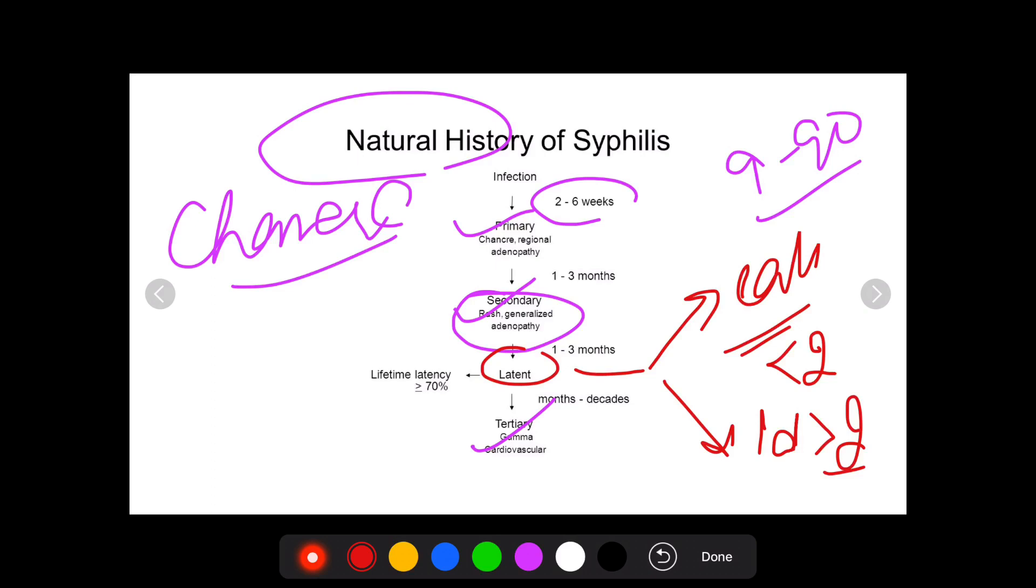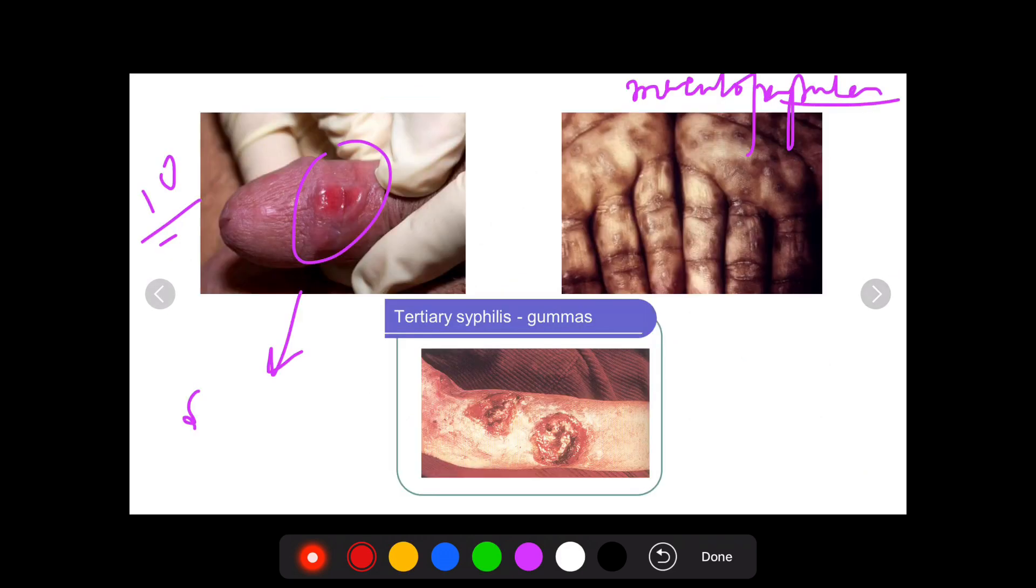Latency can be there in people, a lifelong latency in up to 70% of the cases. While some develop another form or other symptoms later, when it's known as tertiary syphilis. In such case, a presentation can be in the form of a gumma, or the cardiovascular system can be involved in the form of aortitis. This is the picture of a gumma, it's necrotic, ulcerative, commonly occurs in the orofacial region and can occur in other parts of the body.